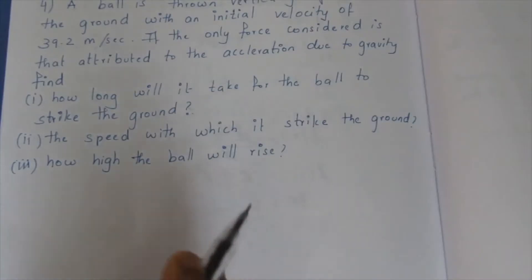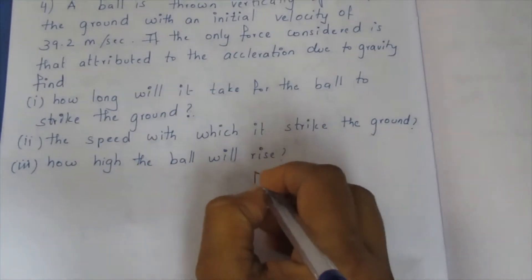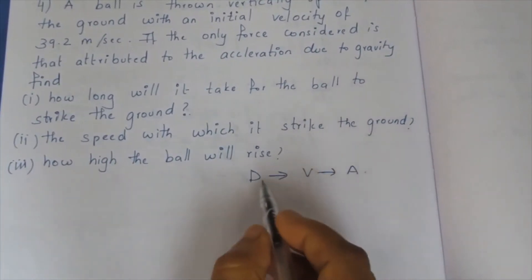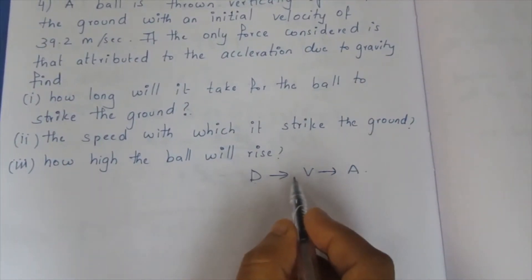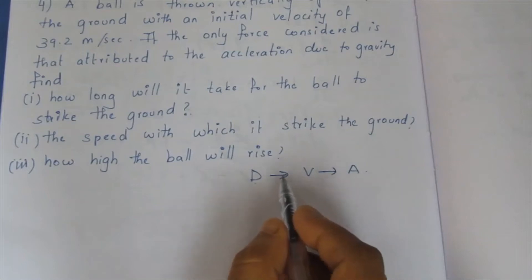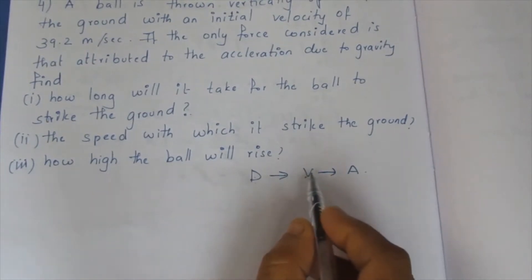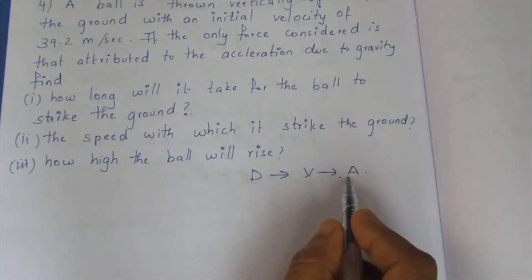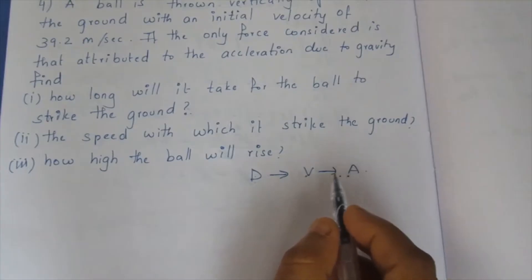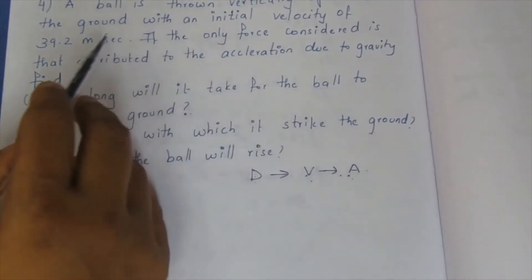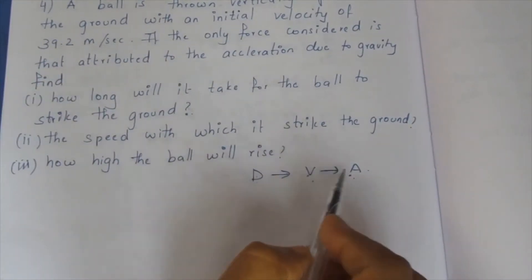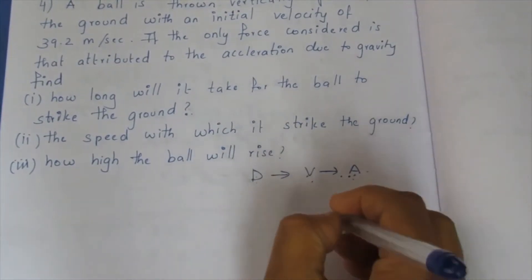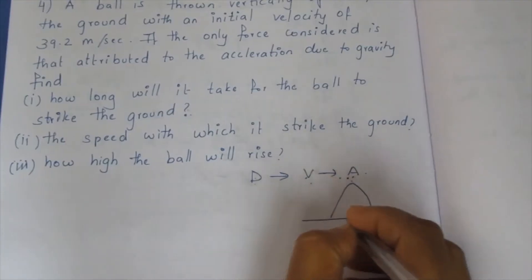Let's look at the relationships between distance, velocity, and acceleration. Velocity is the derivative of distance, and acceleration is the derivative of velocity. So if we look at the acceleration, velocity is obtained by differentiating distance with respect to time.